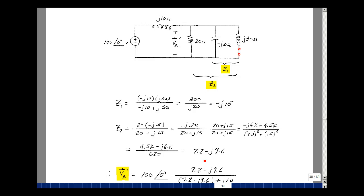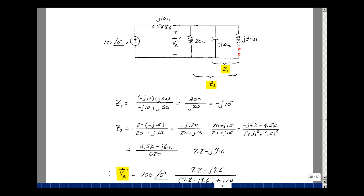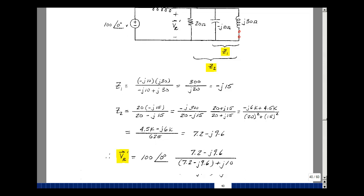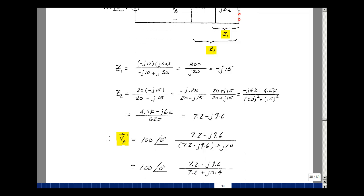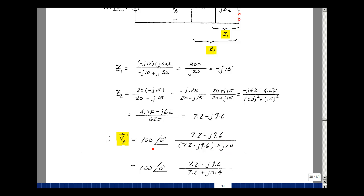And I can do the voltage divider. So this impedance over this impedance plus this one times the input voltage of 100 at angle 0 will give me the voltage across the resistor due to the first source. So 7.2 minus j9.6, and then adding the j10 times this. Let's add these together here, real plus real, imaginary plus imaginary. So 7.2 and then a plus j.4.